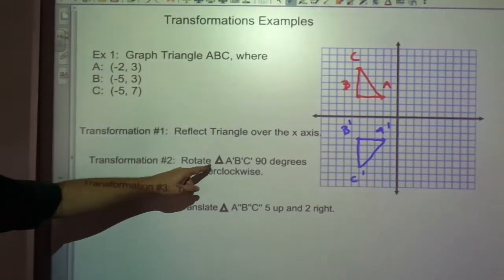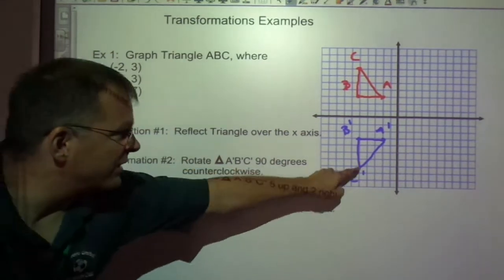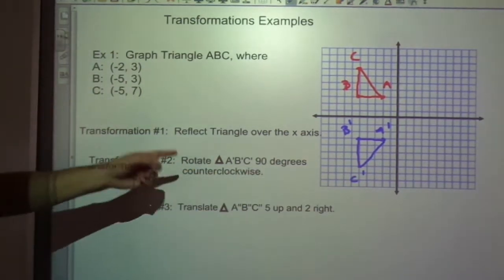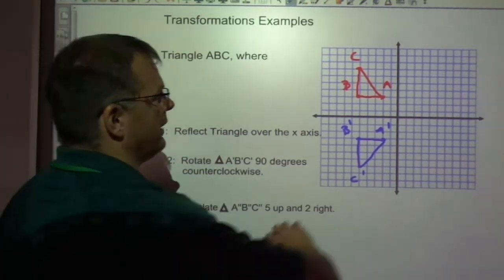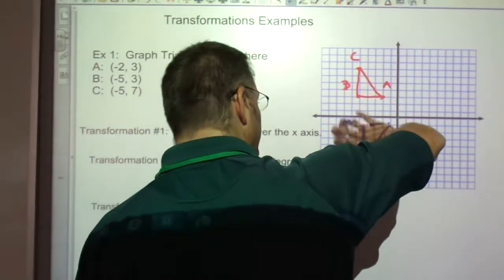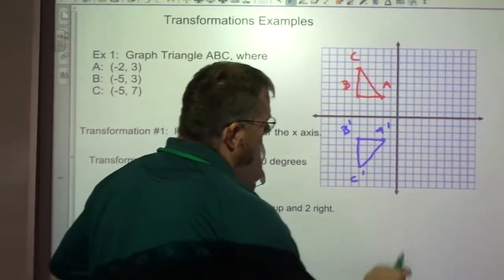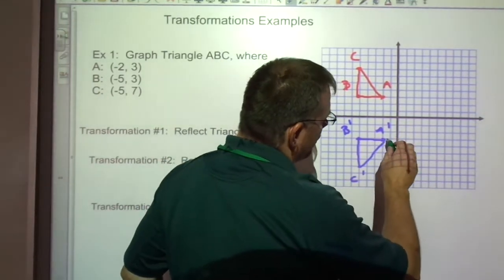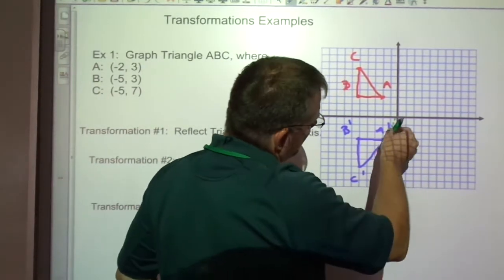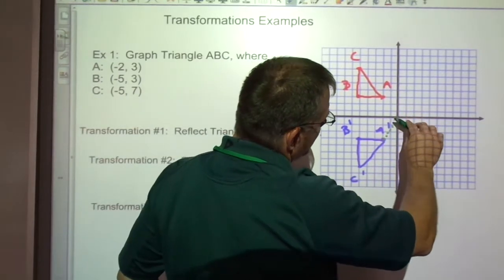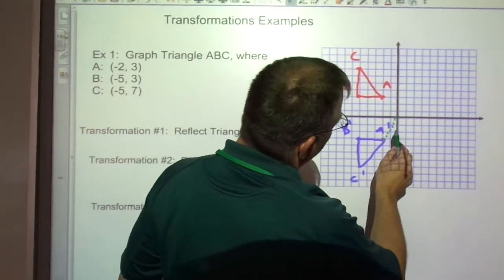Then it says to rotate triangle A prime, B prime, C prime, that's this one, 90 degrees counterclockwise. So again, this is clockwise, and this is counterclockwise.